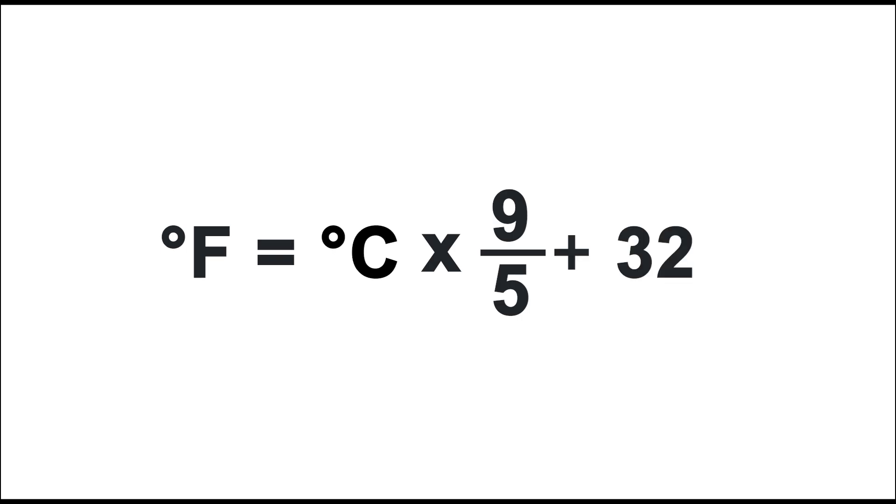But if you want to do this faster in your head, you can simplify the equation. Just multiply Celsius by 2, then add 30.